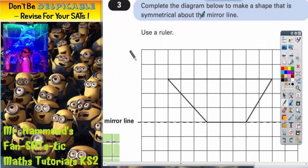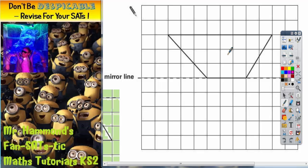Question 3 says, complete the diagram below to make a shape that is symmetrical about the mirror line. Use a ruler. So there's our shape, there's our mirror line which is our line of symmetry and we've got to make a shape that's symmetrical.